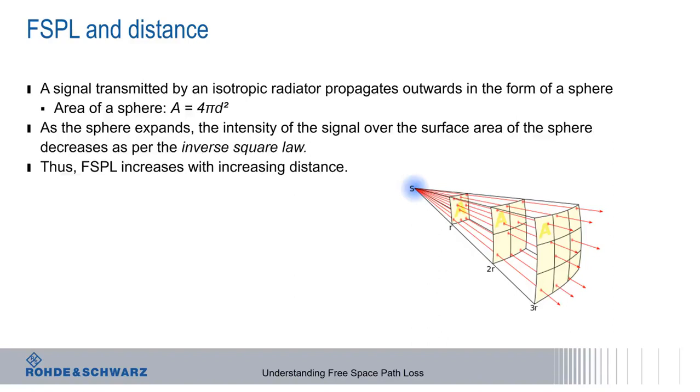This is why free space path loss increases as the distance from the source increases. We can represent this mathematically using the equation s equals p tx times 1 over 4 pi d squared, where s is the power density.